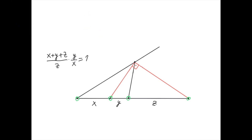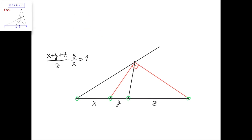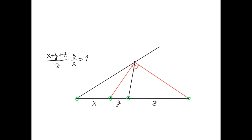We can also prove this statement in the reverse direction. Suppose we have four points that are in harmonic division, i.e. (X plus Y plus Z) over Z times Y over X equals 1. Then, suppose we take a point such that this angle here is 90 degrees. Then we can show that this line is actually the angle bisector of this angle, and that this line is actually the external angle bisector of this angle.